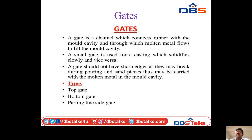Gates: a gate is a channel that connects the runner with the mold cavity, through which the molten metal flows to fill the mold cavity. Small gates are used for slow-solidifying castings. The gates should not have sharp edges as they may break during pouring, causing sand pieces to be carried into the mold cavity. Types of gates are: top gate, bottom gate, parting line gate, and side gate.